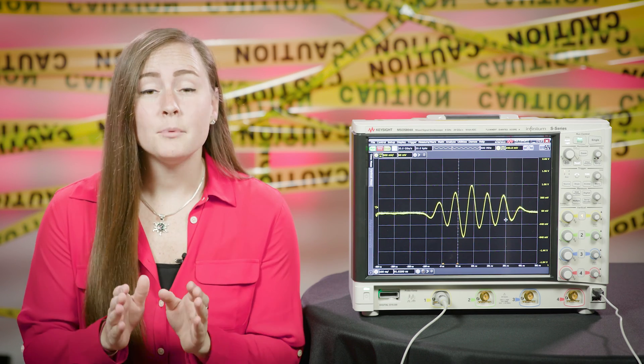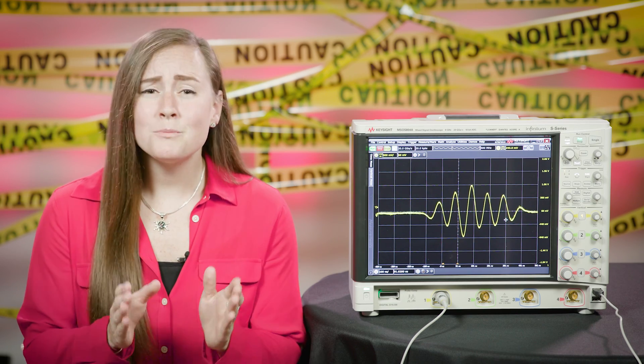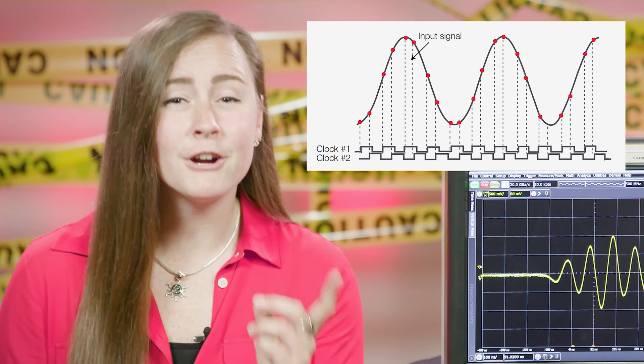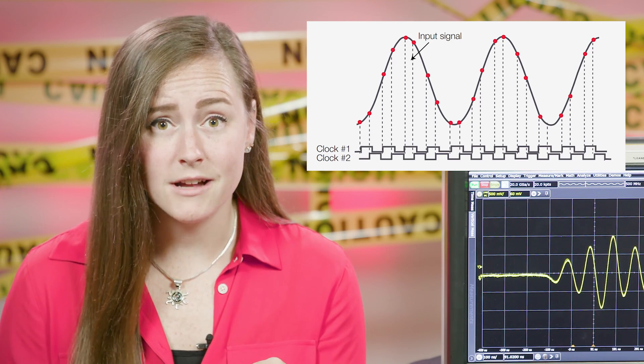If you think about the Nyquist theorem, it states that the samples must be equally spaced in time to produce an accurate trace. While this is relatively easy to do with a single ADC, it's much more difficult to get the phase delay clocks of multiple ADCs perfectly synchronized. To achieve this, the synchronized ADCs must have the same vertical gain, offset, and frequency response.